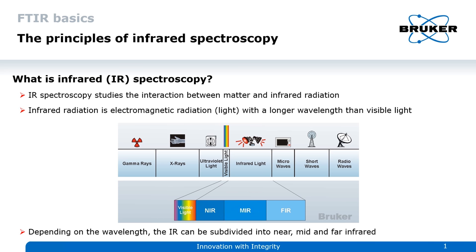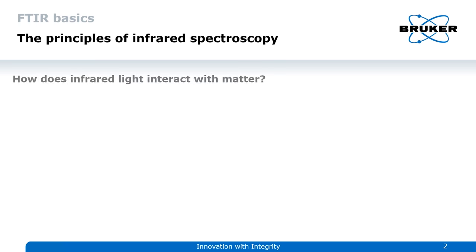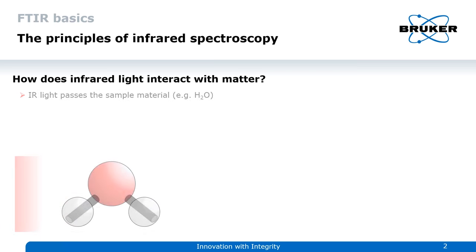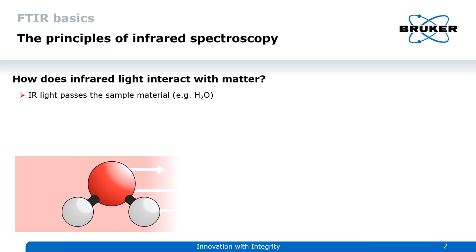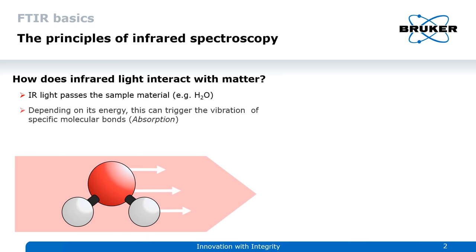As mentioned before, infrared light interacts with matter. But how exactly? First, infrared light passes the sample — in our case, an exemplary water molecule. Depending on the energy levels, this light can trigger vibration in specific molecular bonds.